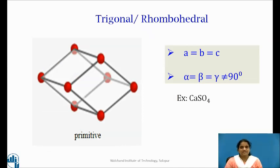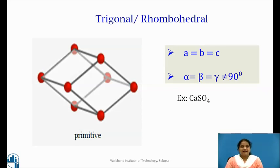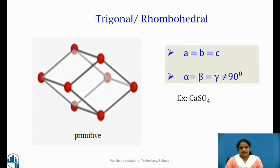In the rhombohedral system, also known as the trigonal system, the angle between each pair of crystal axes is the same but not equal to 90°. The lattice parameters are A = B = C, and alpha = beta = gamma, but they are not equal to 90°. There is only one possible arrangement, simple trigonal, which has lattice points at all eight corners of the unit cell.